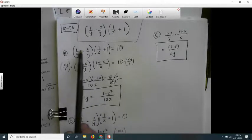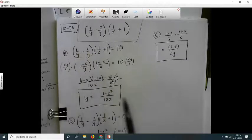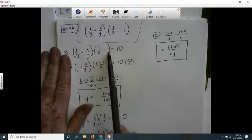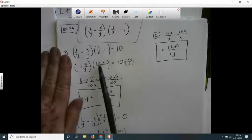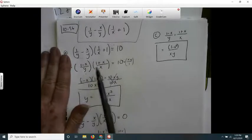I added the numerators and got this. Then I thought of the 1 as x over x, so that gave me 1 plus x over x. I want to get rid of the denominators.